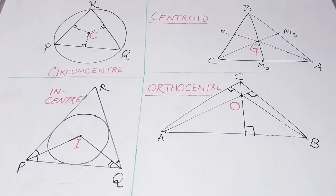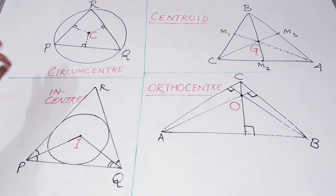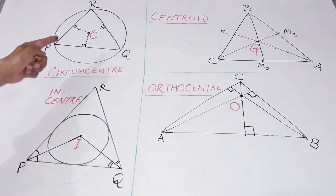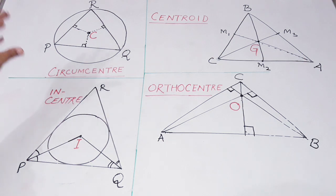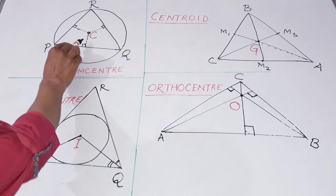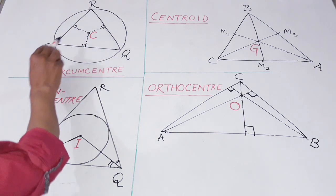The very first point is the circumcenter of a triangle. As the name suggests, the circumcenter is the center of a circle which circumscribes the triangle — that is, the center of the circumcircle. At the same time, it is defined as the point of intersection of the perpendicular bisectors of its three sides. The circumcenter of a triangle is the point of intersection of the perpendicular bisectors of the three sides, and it is normally denoted by the letter C.